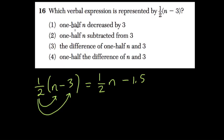So here they wrote 1 half n decreased by 3. Well, I might say no for that one, because that sounds like this to me, 1 half n minus 3. But here, notice that n minus 3 comes first, before you multiply it by a half.